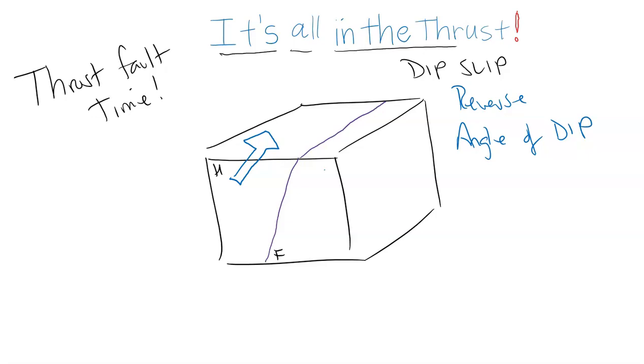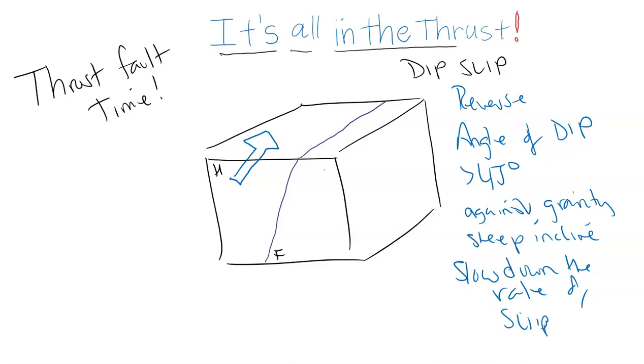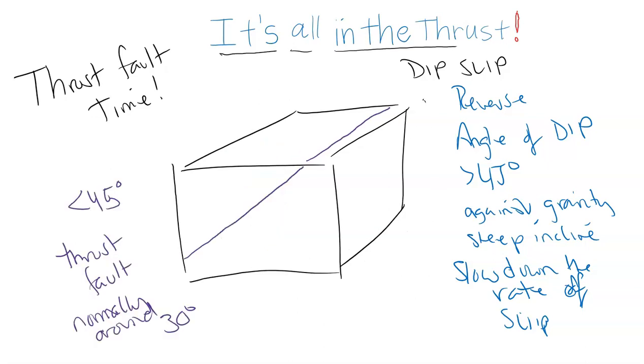But the angle of dip in a regular reverse dip-slip is going to be around 45 degrees. This is difficult because it goes against gravity—it's a steep incline. This is going to slow down the rate of slip or displacement or movement along this fault line. However, in a thrust fault, the angle dip is less than 45 degrees, around 30 degrees normally.